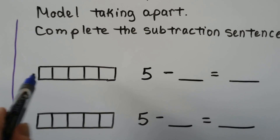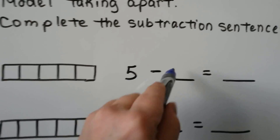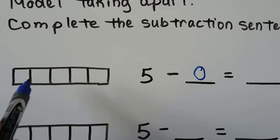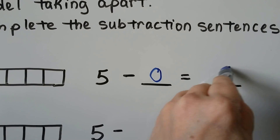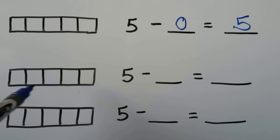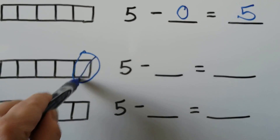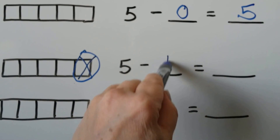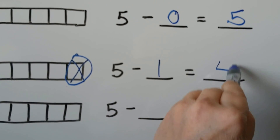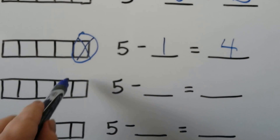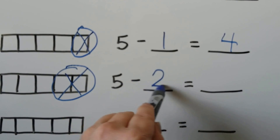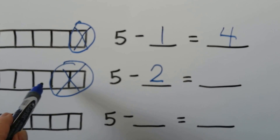If we have five squares in our bar model and we take zero away, we're not going to circle or cross any out — we still have five. And if we take one of them away, then if we take two away, we'll have one, two, three, four left. If we take two away, then we'll have one, two, three left.